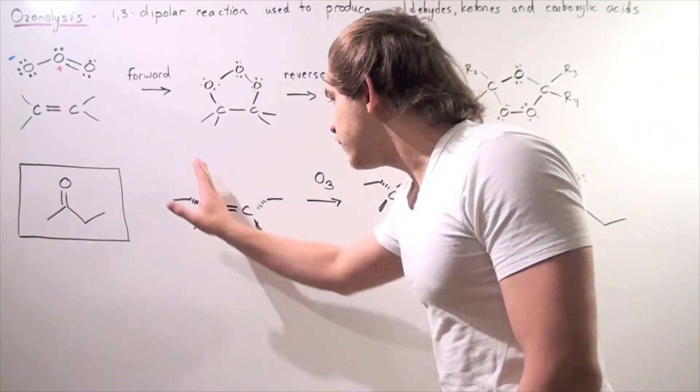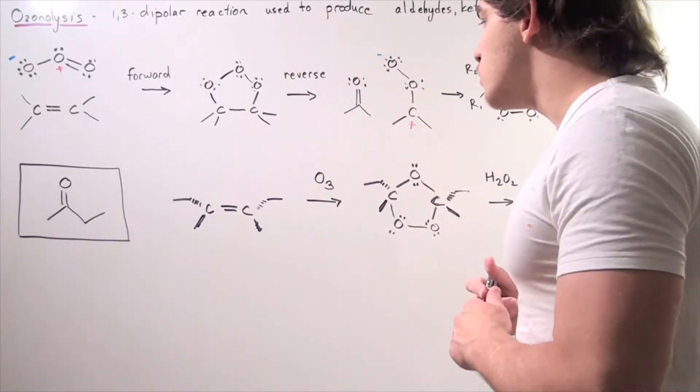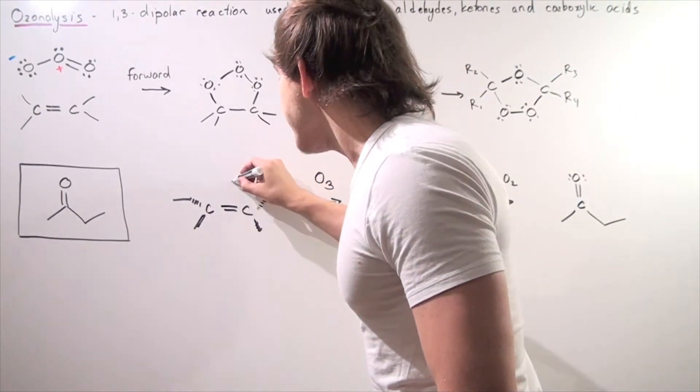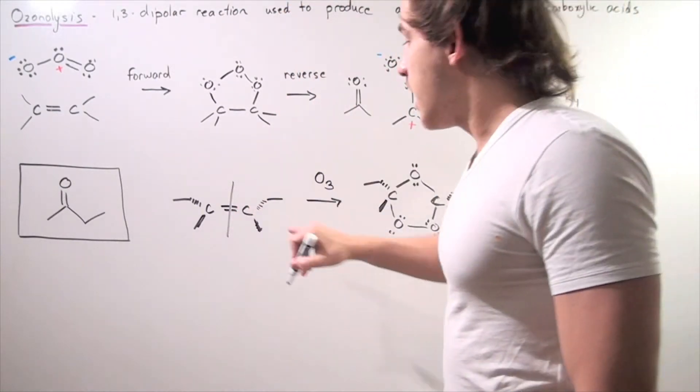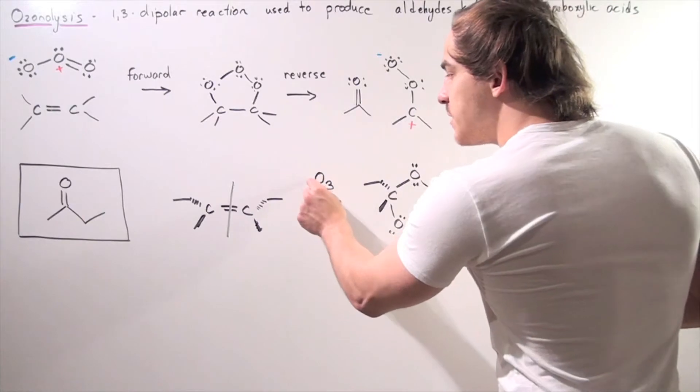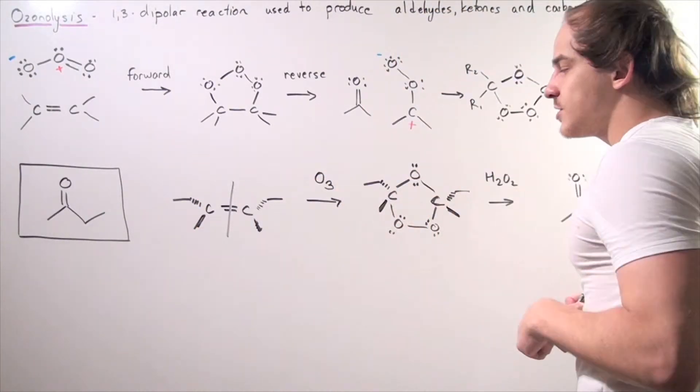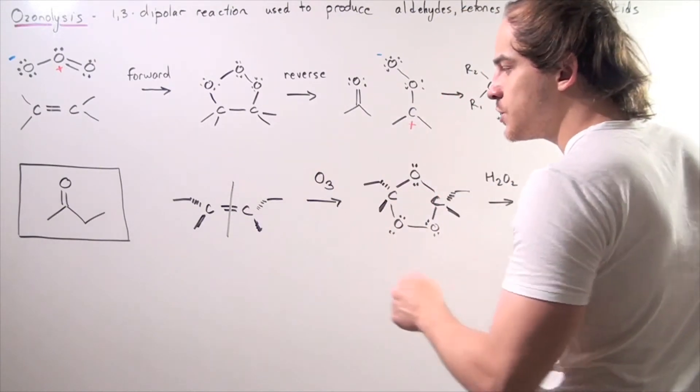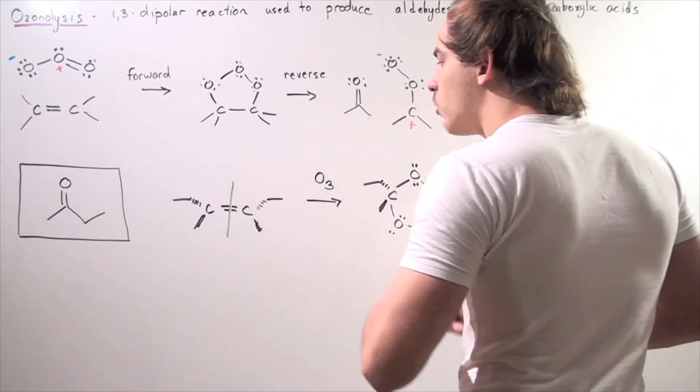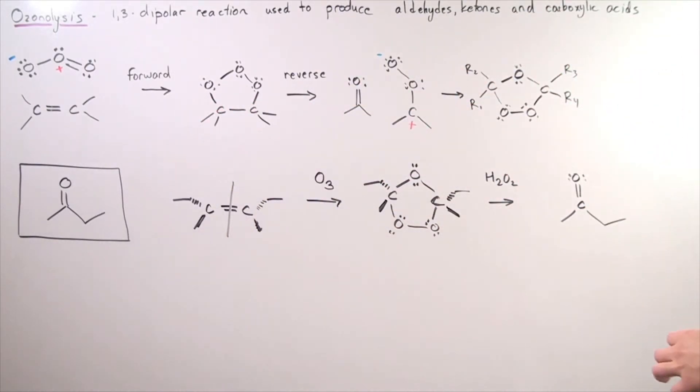So once again, if we look at the beginning, what happens is this ozone molecule breaks this double bond here. One of the oxygens attaches to this carbon and another oxygen from this ozone attaches to the other carbon and a double bond is formed at the end via this mechanism shown here.